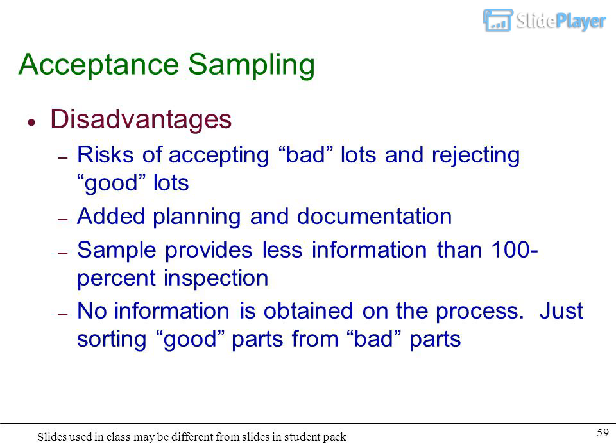Acceptance sampling disadvantages: Risks of accepting bad lots and rejecting good lots, added planning and documentation. Sample provides less information than 100% inspection. No information is obtained on the process, just sorting good parts from bad parts.